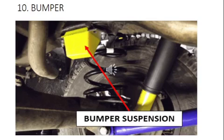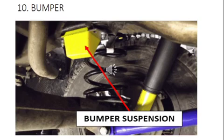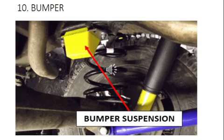Komponen yang kesepuluh adalah bumper. Yang warna kuning pada gambar adalah bumper. Ada bumper yang menempel pada kerangka dan ada juga bumper yang menempel pada leaf spring. Fungsinya adalah untuk melindungi komponen suspensi lainnya karena akibat tumbukan yang disebabkan oleh pegas yang melentur melebihi batas maksimalnya.